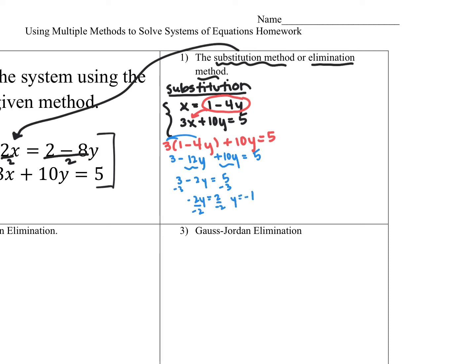Our system's not done until we have all the variables solved for. So I'm going to take this y equals negative one and plug back into that original equation. That will be x is equal to one minus four times negative one, which is negative four times negative one equals plus four. So we have one plus four, which is five. Our solution should be x equals five, y equals negative one.